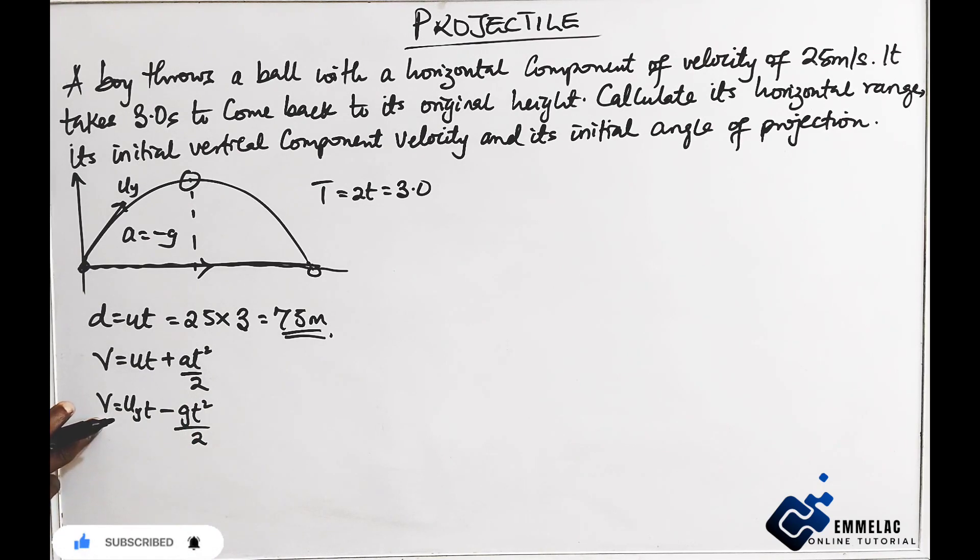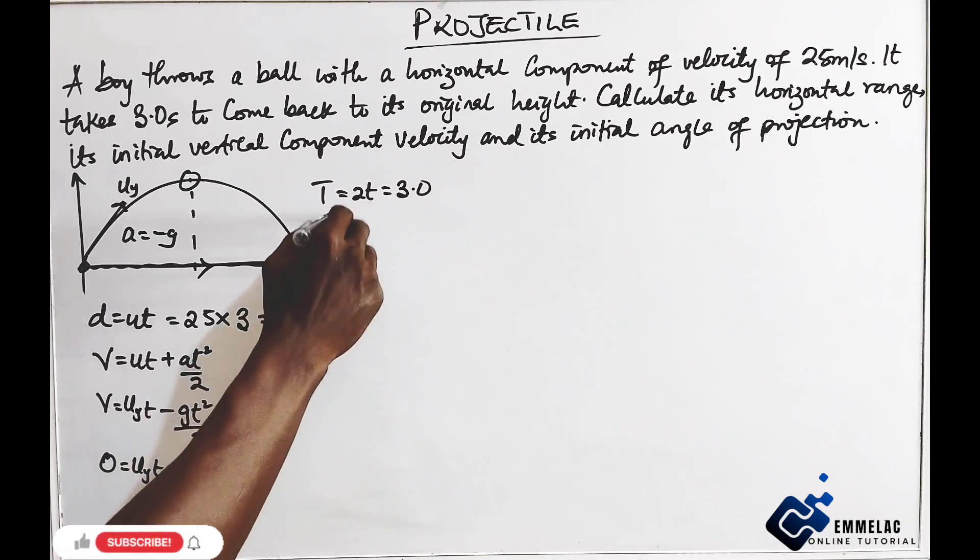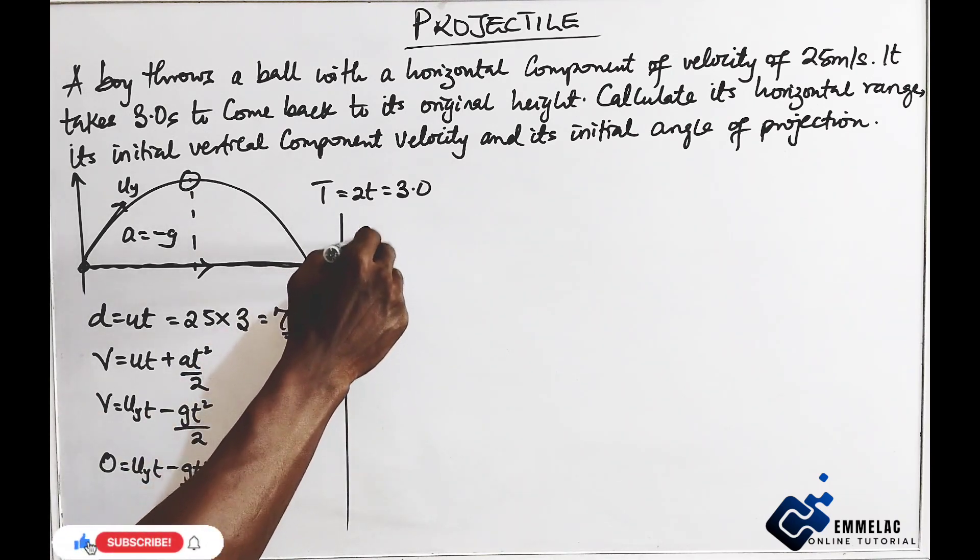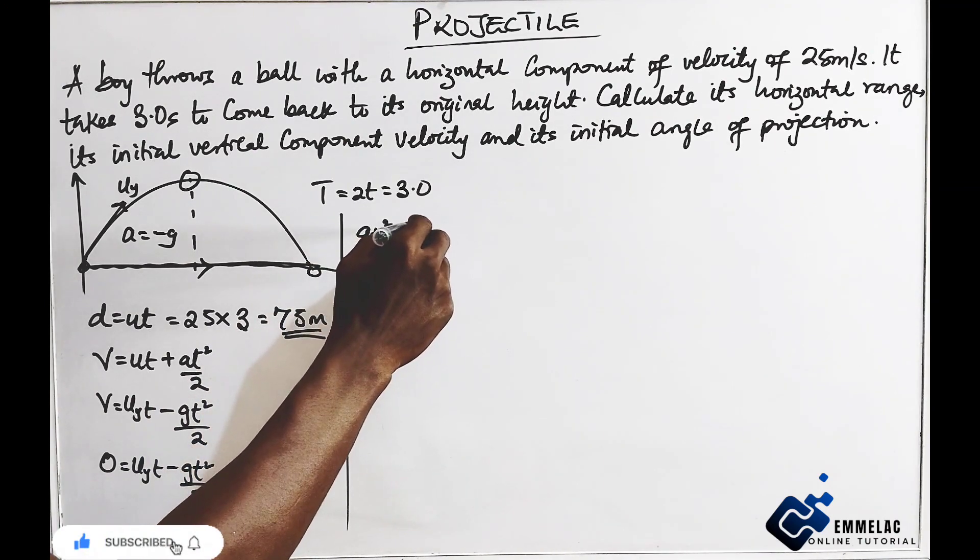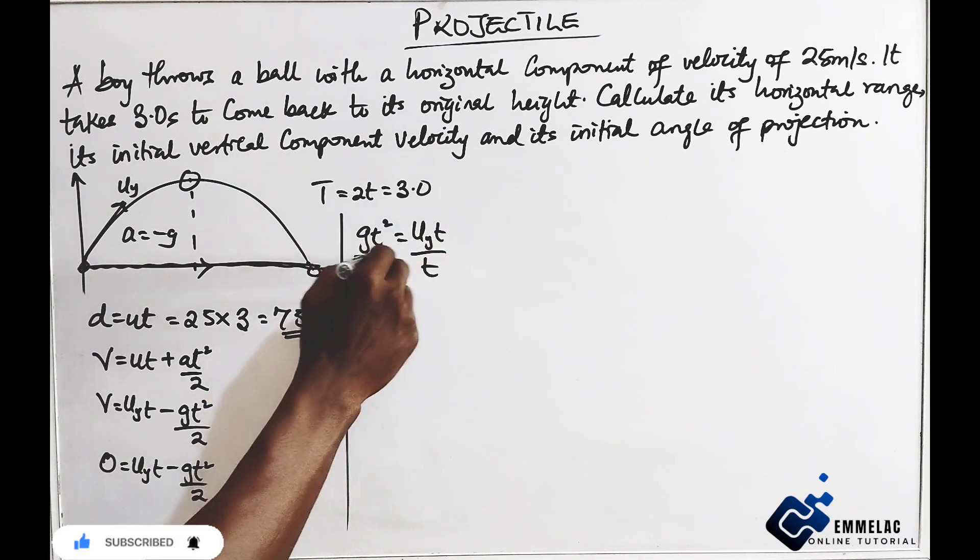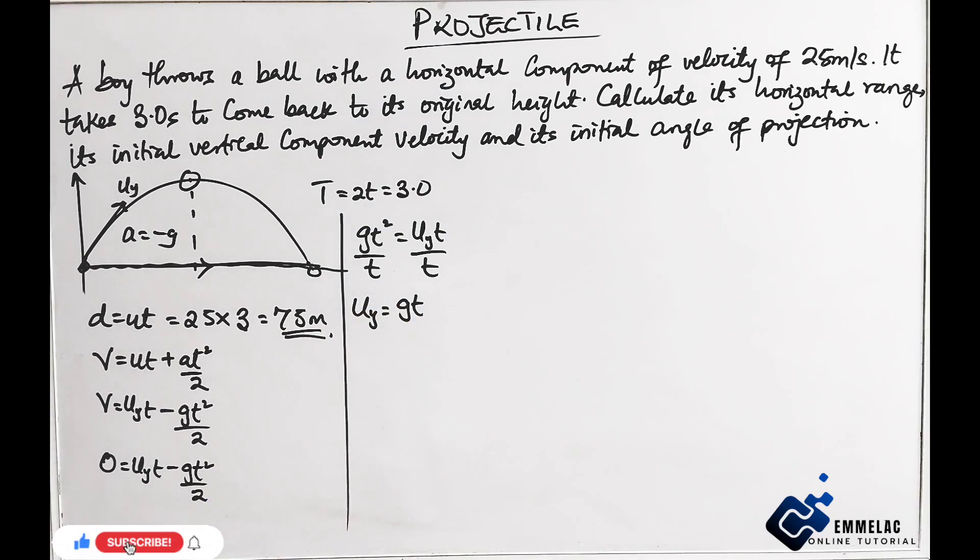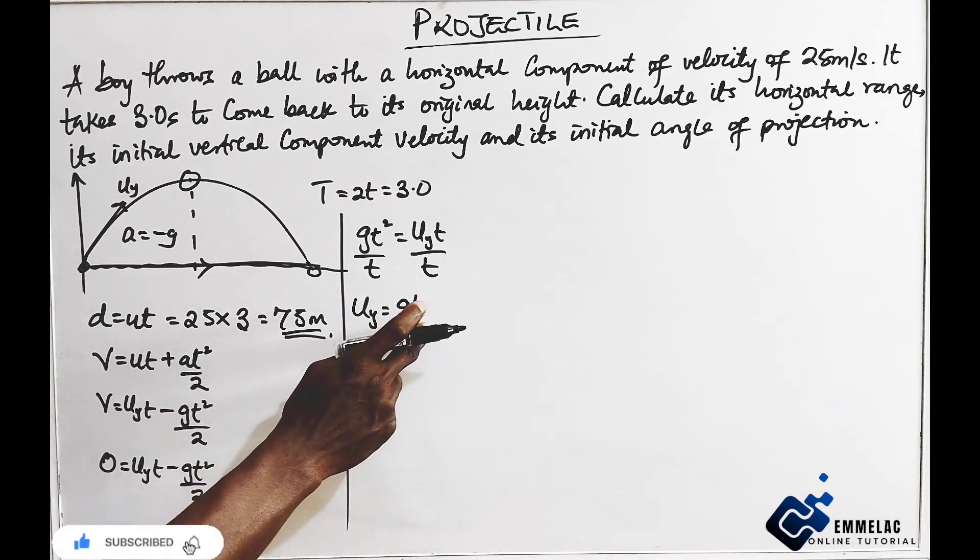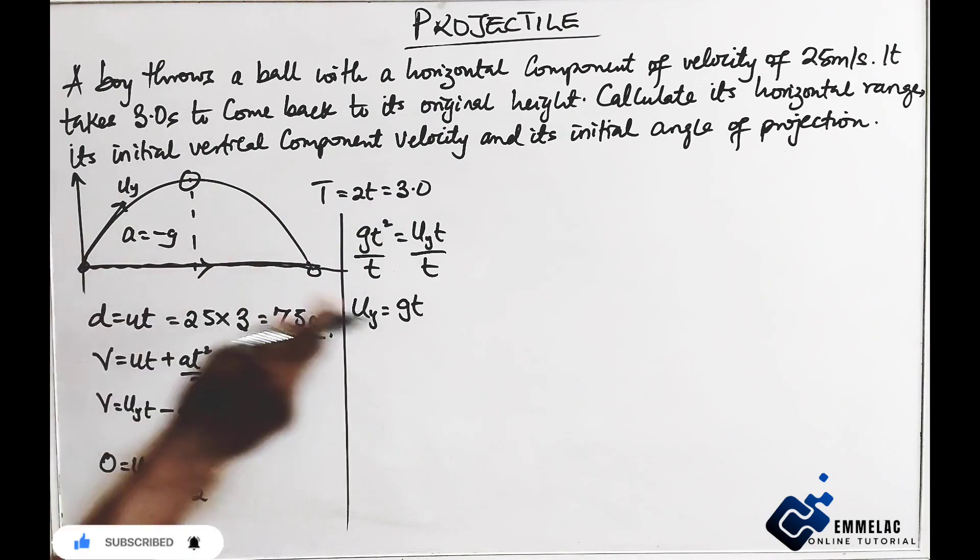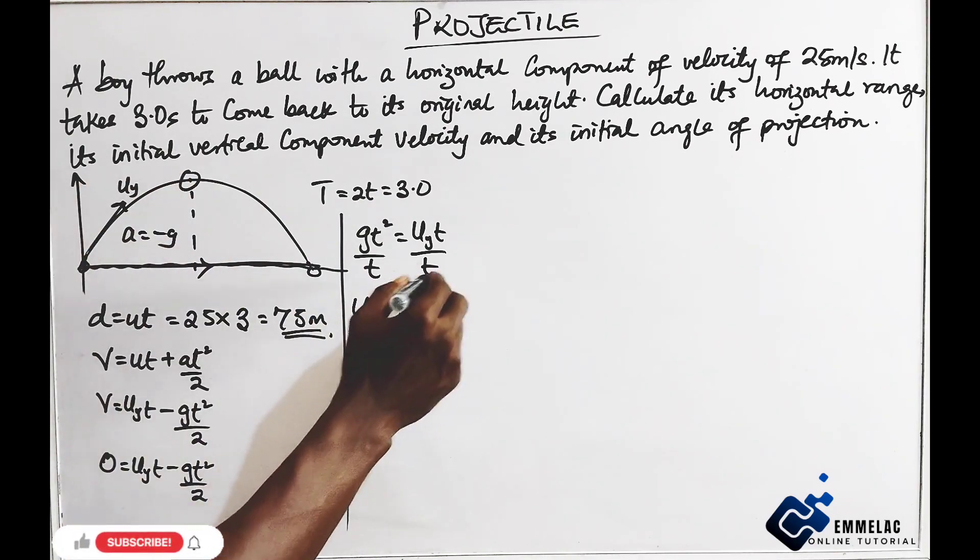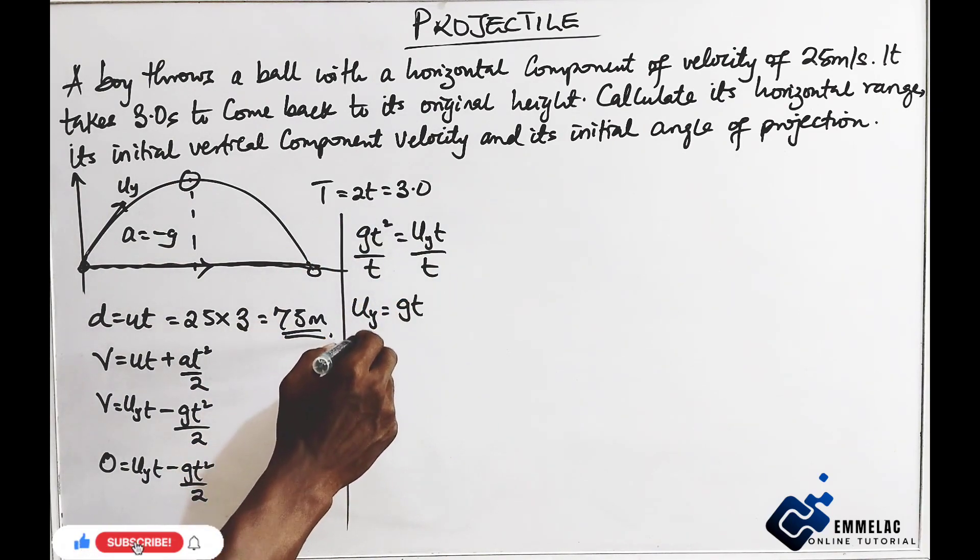At this point, this is 0. So here we have GT squared equals, we will get to have here GT. Then equals, the volume divided by T. So here we have GT. Now take note at this point, this T here will be half of the total flight. Because we are clicking from here to here, so our T will be divided by 2.